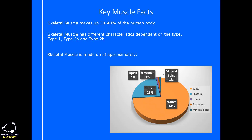Approximately 70 to 75 percent of skeletal muscle is water — similar to our physical body overall. 18 to 23 percent is protein, and this is really key because protein makes up the main physical component of that muscle. Then there's 1 percent lipids (fats), 1 percent glycogen (stored carbohydrates), and the rest are mineral salts. The main facts to know: water makes up 70 to 75 percent and protein makes up 18 to 23 percent of skeletal muscle.